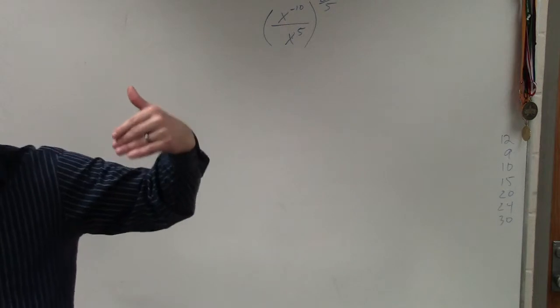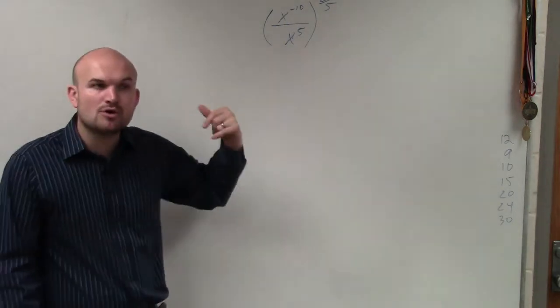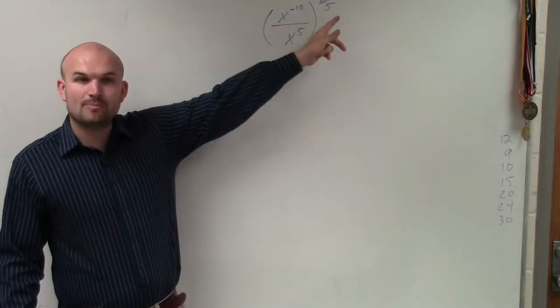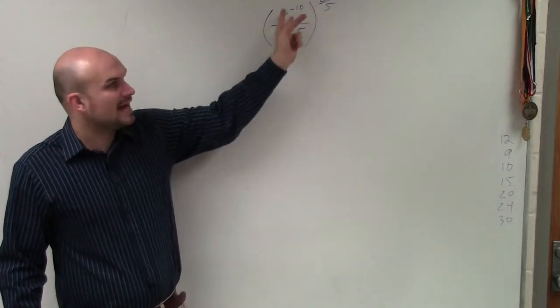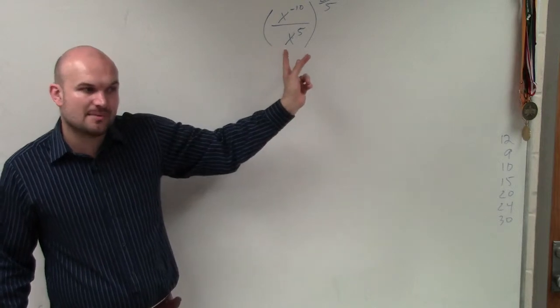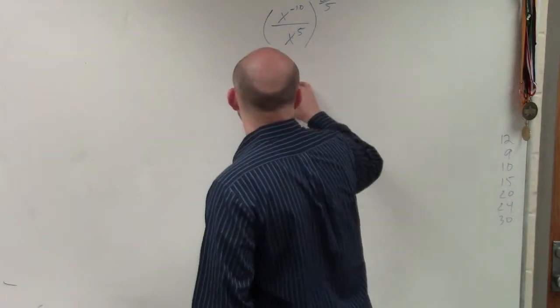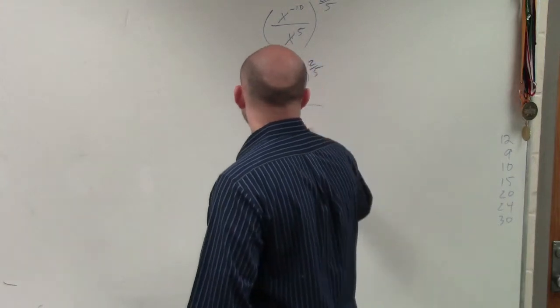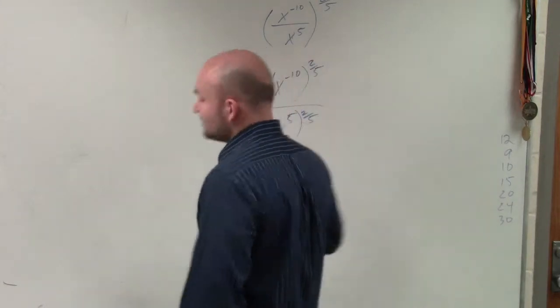One of the rules of exponents that we talked about was what we call the power to quotient rule. And what the power to quotient rule tells us is if you have a quotient raised to a power, that power gets applied to both the numerator and the denominator. So basically, I can rewrite this as x to the negative tenth raised to the 2 fifths over x to the fifth raised to the 2 fifths.